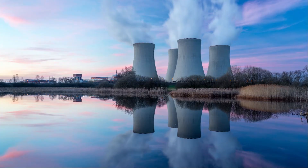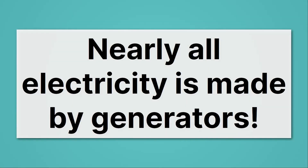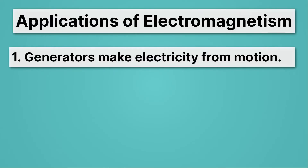Those cooling towers are seen across many different types of electrical production. Nuclear power shows these giant cooling towers because nuclear power works basically the same way as geothermal — except its heat source is nuclear reactions. Nuclear reactions create heat, which creates steam, which spins a turbine, and then that steam is cooled in the cooling towers. Coal power does exactly the same thing, though you also see smokestacks because coal power produces emissions — it burns coal to create heat to create steam to push the turbine. Nearly all electricity is made by generators; the only real exception is some types of solar cells.